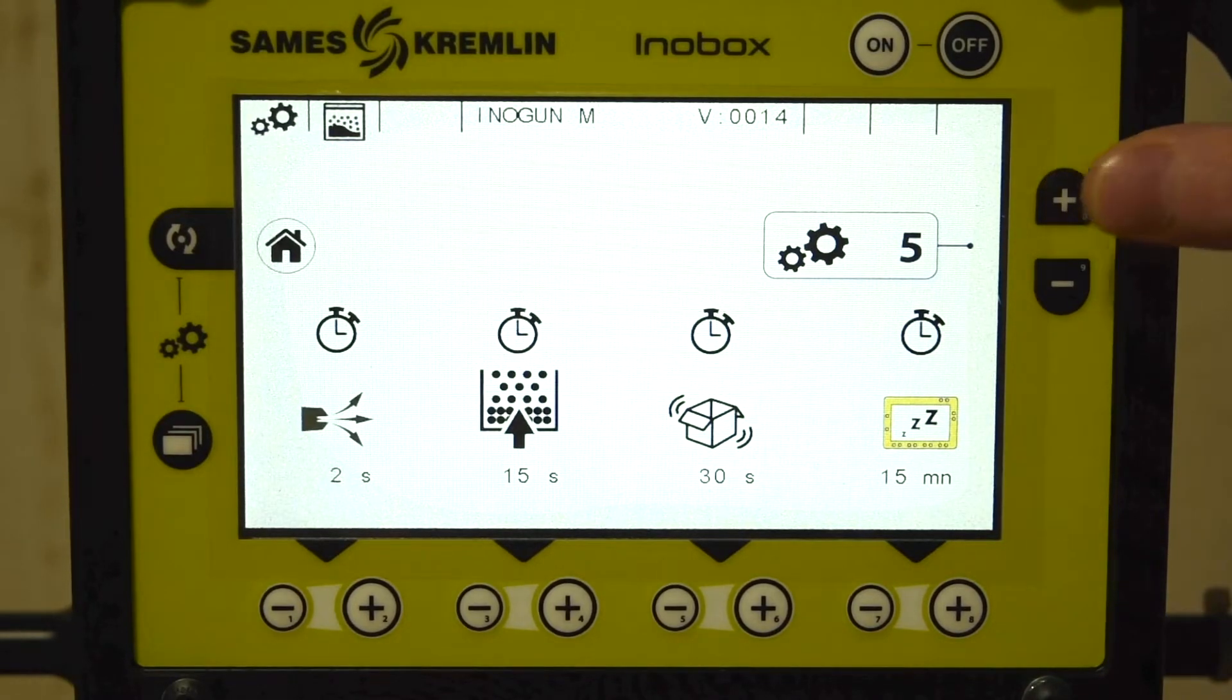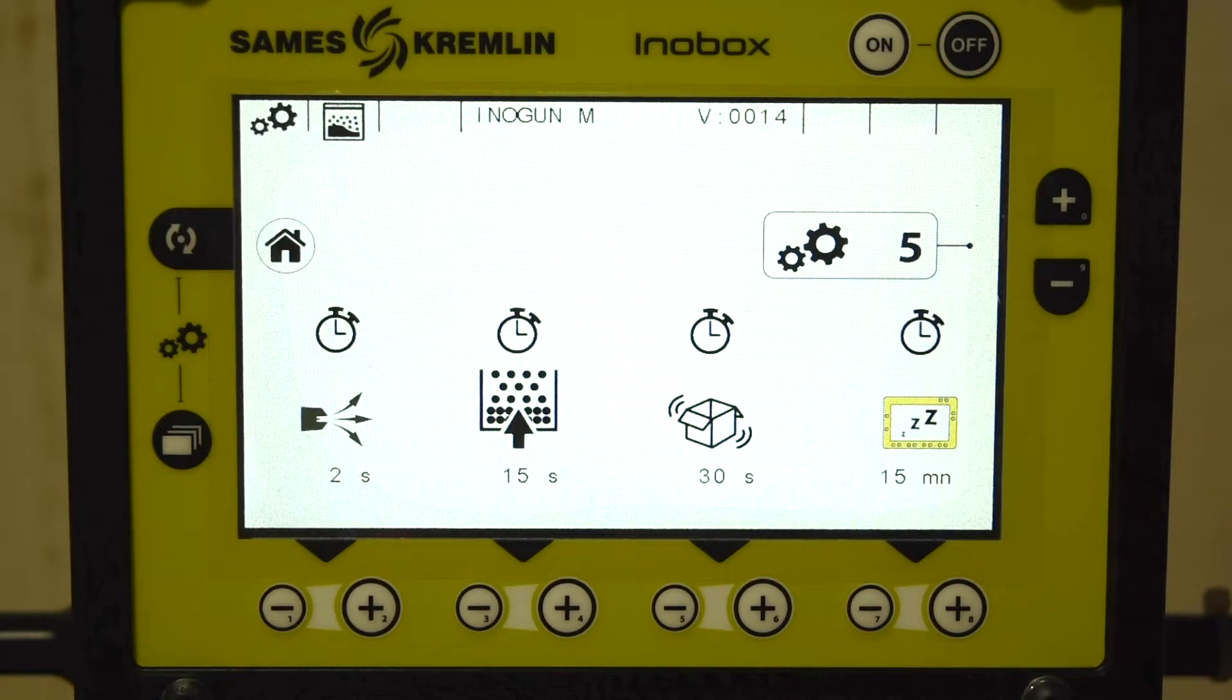On this screen, you can set the delay times for electro blowing, fluidization, box feed motor, and the screen timeout. This determines how long each function will run after the trigger is released.